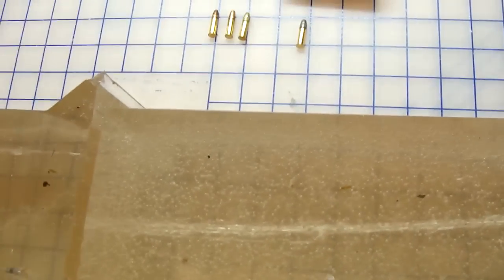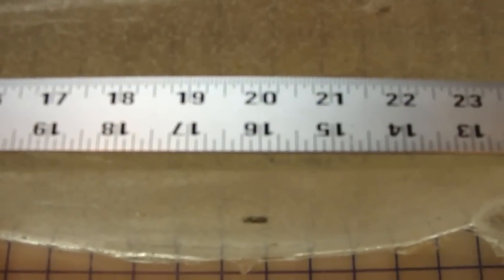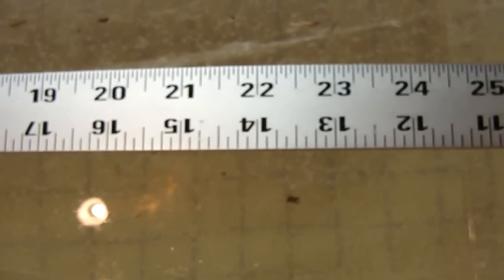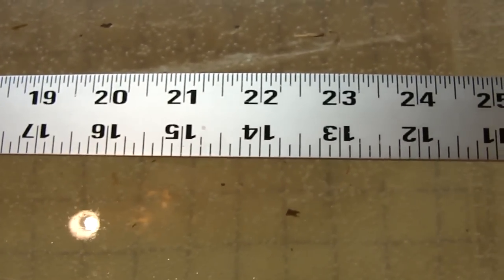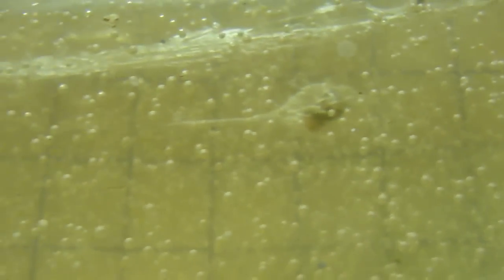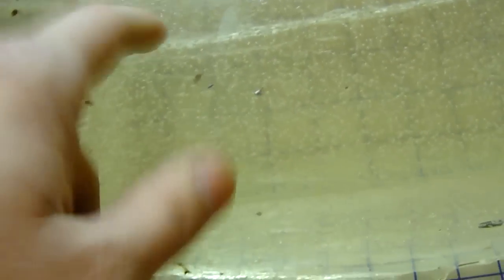So the Blazer is looking at about 20 and a quarter inches of penetration, and the Federal is at about 22 and a half. So I'm going to get these few bullets dug out here, we'll get some weights on them and move on to the next video, which is a 12 gauge test.